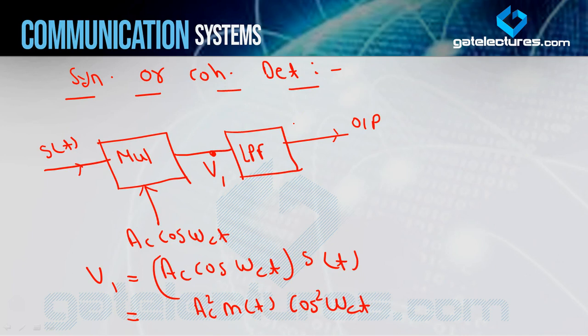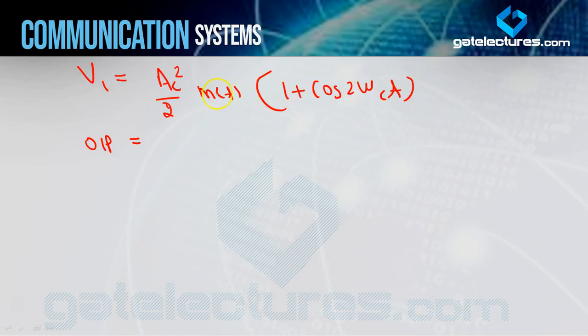Our demodulator's input is the DSBSC signal, but the output should be the message signal m(t). The maximum frequency of the message signal is FM. So the low pass filter will only pass frequencies from 0 to FM. One term is (AC²/2)·m(t), whose frequency is FM — since the constant multiplier has no frequency, m(t) carries frequency FM — so this term will pass through.